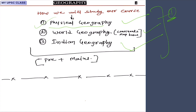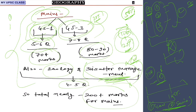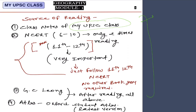First we will discuss physical geography completely. From the next video, after the current affairs video, we will start physical geography. Physical geography has 50 percent importance — out of 10 questions, 5 come from physical geography. World geography covers continent and map-based questions and is relatively less important — sometimes only one question in prelims. Indian geography is also very important. Everything we discuss will be relevant for both prelims and mains.